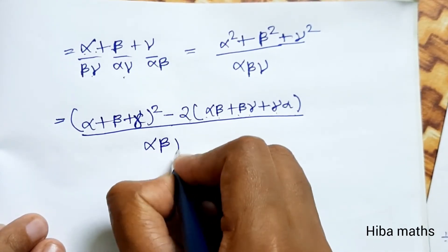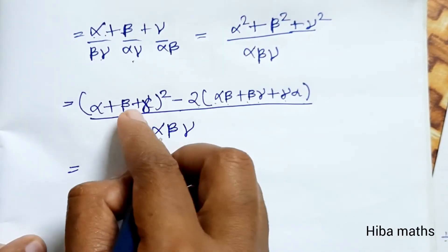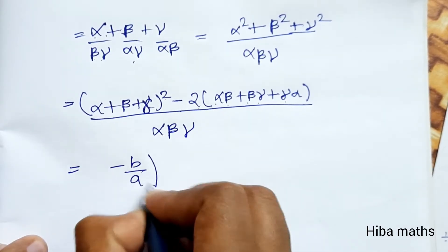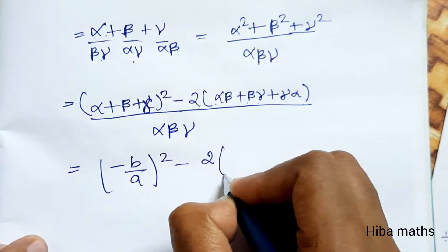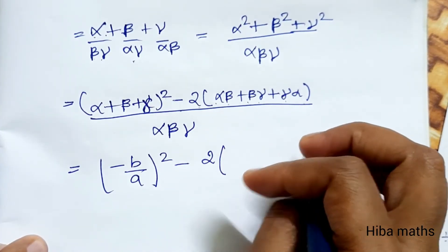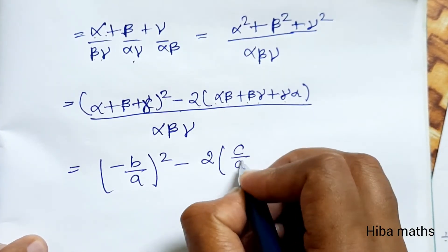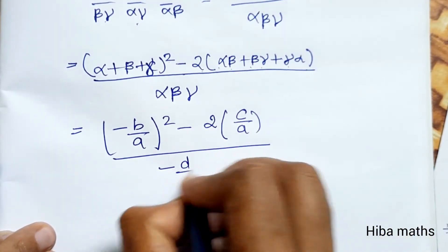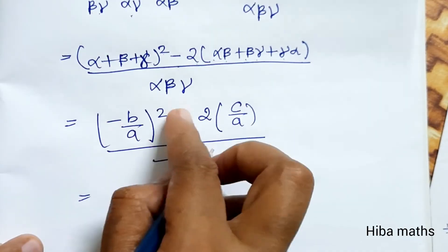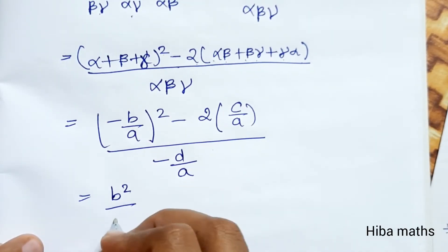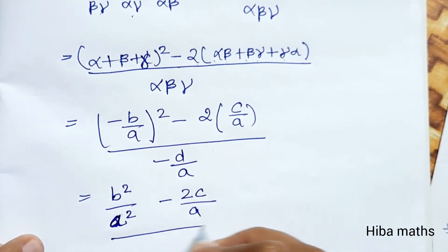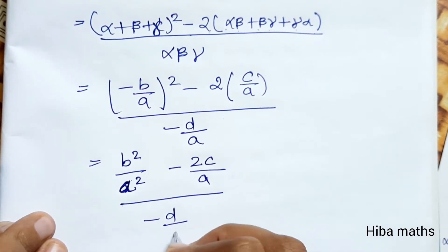Dividing by alpha·beta·gamma, the sum of roots is minus b over a. So we get (minus b over a)² minus 2 times (c over a), all divided by the product of roots, which is minus d over a. This gives b² over a² minus 2c over a, divided by minus d over a.